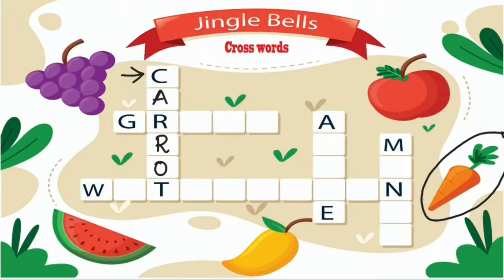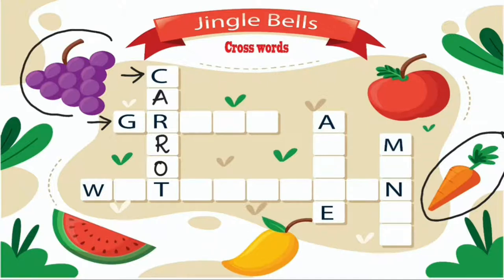Next we are going to find the name of a fruit which starts with the letter G. It is a purple color fruit and it is found in clusters. Where is the purple color fruit? It is found over here. What is the name of this fruit? It is grape.